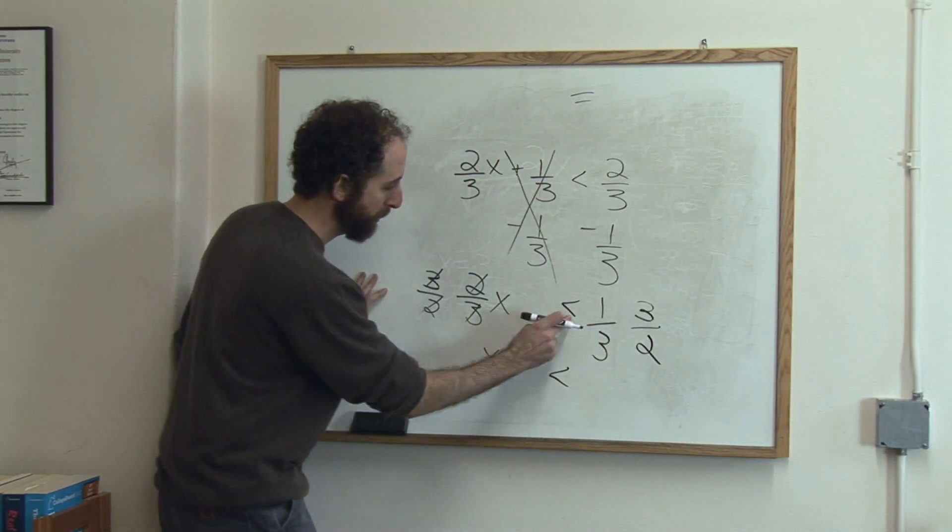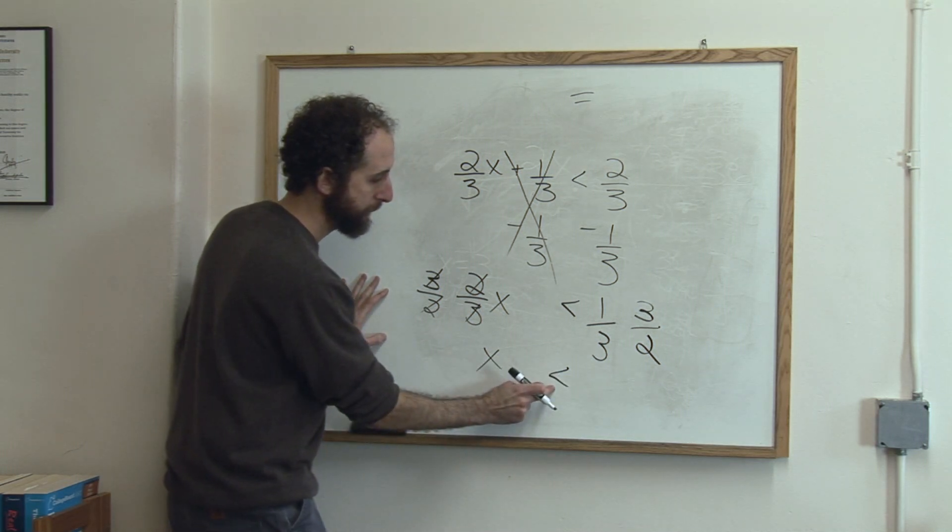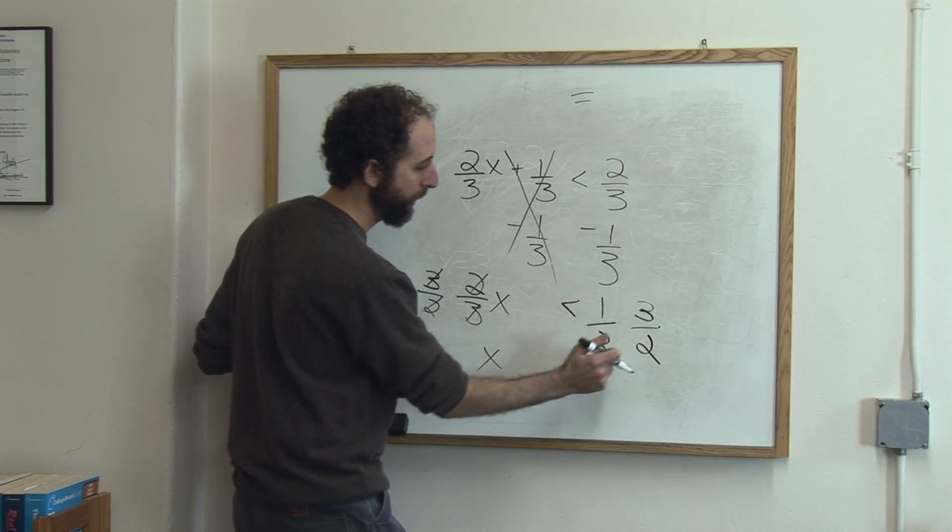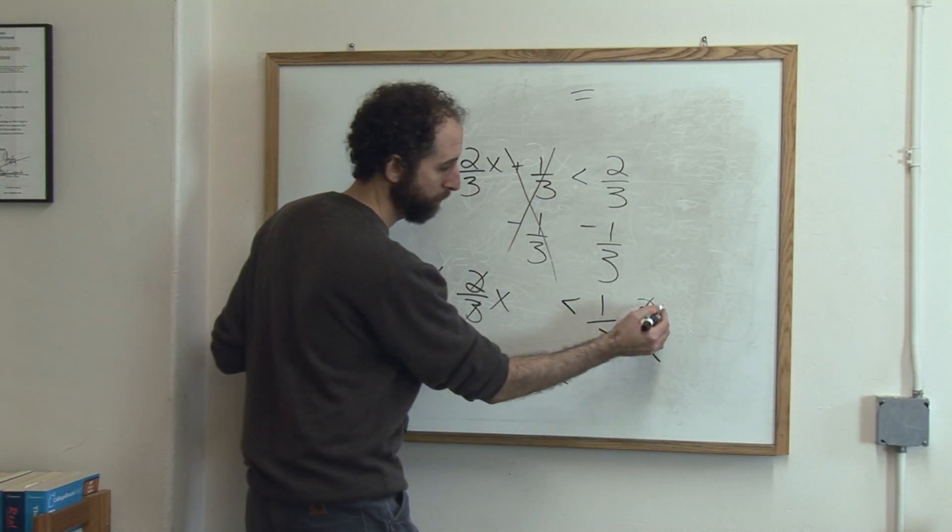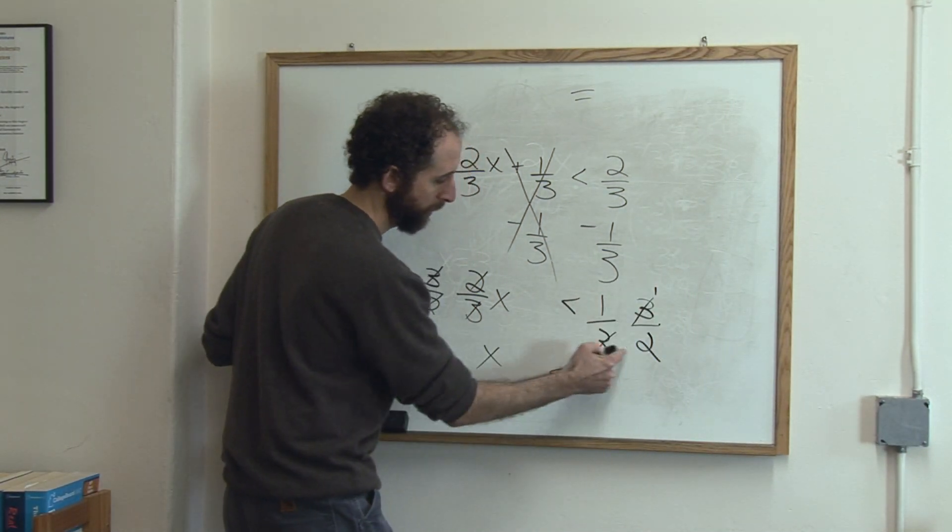Keep the less than sign. Always remember to drop it straight down. So we have x is less than 1 third times 3 halves. The threes cross cancel, makes it easy. So we have 1 times 1 is 1 over 2.